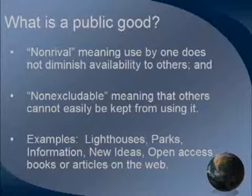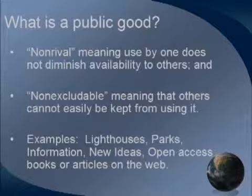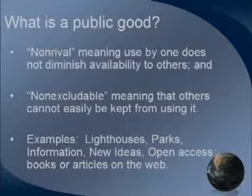A loaf of bread is an example of what economists call a rival good — what I use of it diminishes the amount anyone else can have. If I eat the bread, that's it. It's also excludable, meaning it's easy to prevent other people from using it once I've bought it. This is in contrast to a good like a lighthouse, a park, or a new idea, because these are neither rival nor excludable — so economists call these public goods.